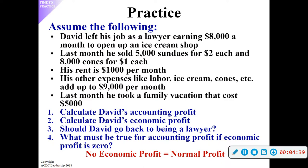Let's break it down. He sold five thousand sundaes for two dollars each — that's ten thousand dollars. He sold eight thousand cones for a dollar each — so we're at eighteen thousand dollars in total revenue. Rent is an explicit cost of one thousand dollars, bringing us to seventeen thousand. Then he has other expenses — ice cream, labor — those are explicit costs of nine thousand dollars.